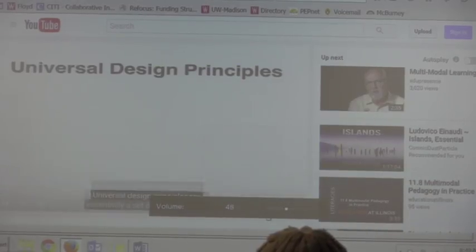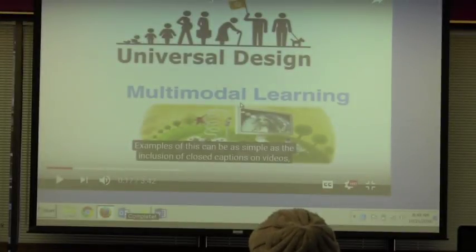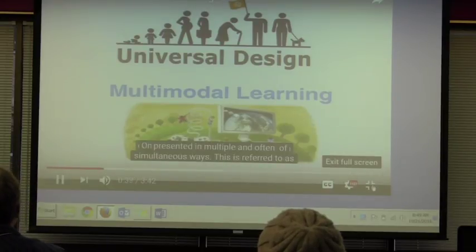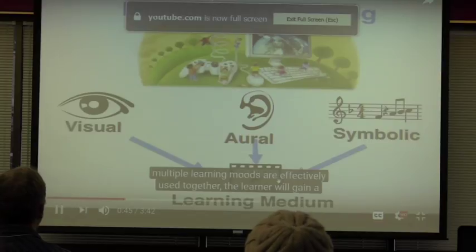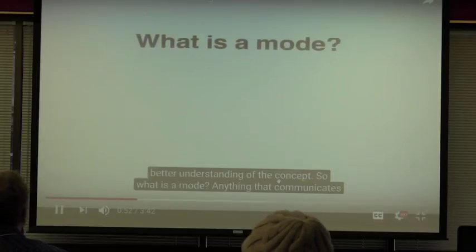Universal design principles are essentially a set of guidelines that help developers create accessibility features in the design of their products. Examples of this can be as simple as the inclusion of closed captions on videos, or as complex as recent changes in HTML5 designed around allowing websites to be navigated in multiple ways using assistive technology. One aspect of the second principle of universal design is that information be presented in multiple and often simultaneous ways. This is referred to as multimodal learning — when multiple learning modes are effectively used together, the learner will gain a better understanding of the concept.